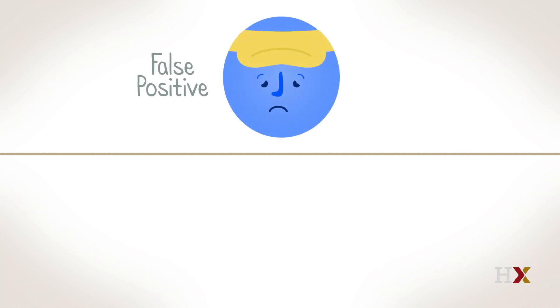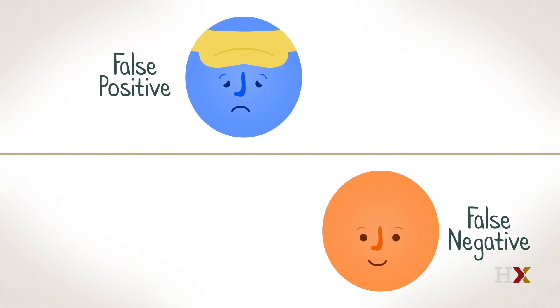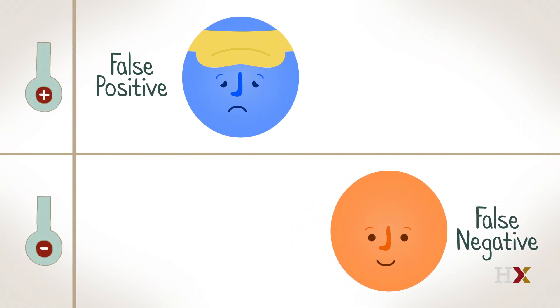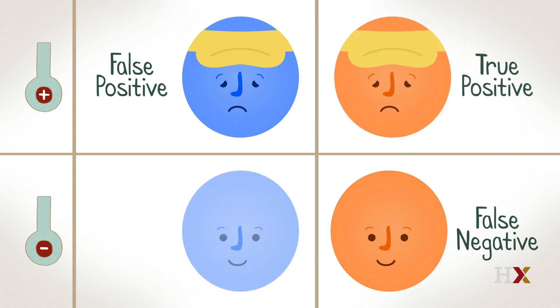Note that there are two ways this test could be wrong. A person could test positive for the disease when they don't have it, or they could test negative when they do have the disease. There are also two ways that the test could be right. A person who has the disease could test positive, or a person who does not have the disease could test negative.